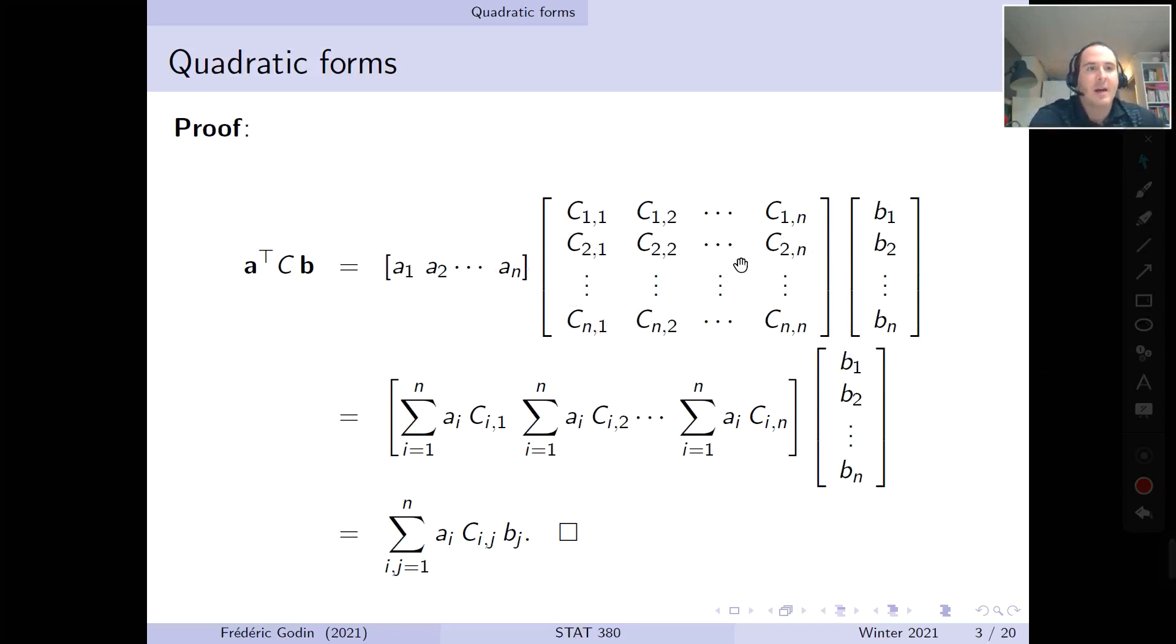So here, how do we do that? The first column of the result is this times this, plus this times this, etc., plus this times this, which is the sum for all indices i going from 1 to n of a, so the element here, times the corresponding element here, so C_i,1. So this is for the first column, and we can do that for all subsequent columns. For example, for the last column, it's going to be exactly the same thing. This times this guy, plus this guy times this guy, etc., plus this guy times this guy, so the result is exactly the same, but instead of having elements of the first column, we have elements of the nth column, so the 1 here is replaced by n.